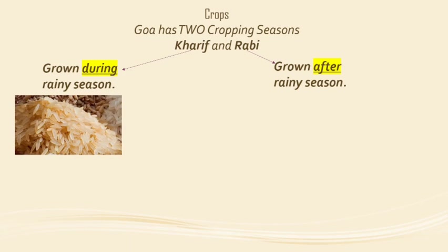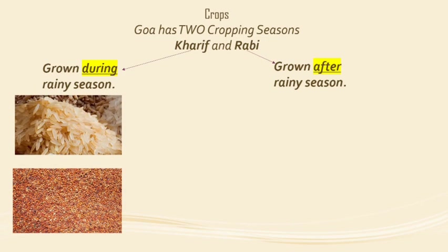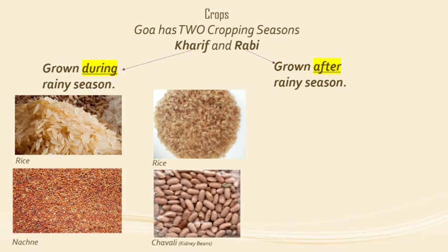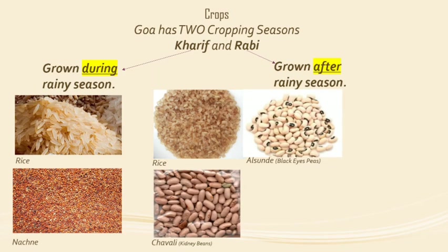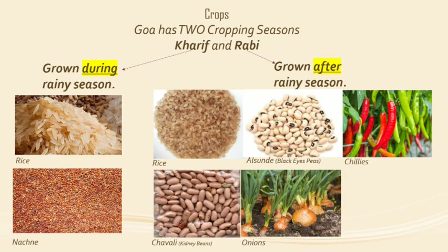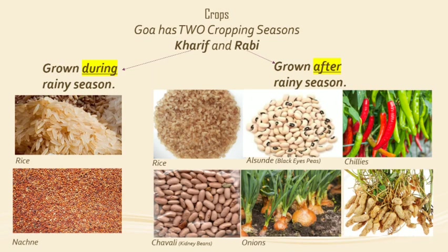Rabi crops are grown after the rainy season. The main Kharif crops grown are rice, nachni, and vari — vari is also a type of rice. The main Rabi crops are rice, jowar, and vegetables such as chilies, onion, groundnuts, etc.